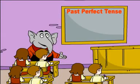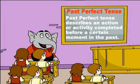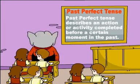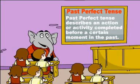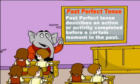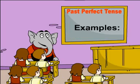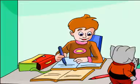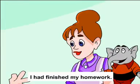Past perfect tense. Past perfect tense describes an action or activity completed before a certain moment in the past. Examples: The principal had gone out. I had finished my homework.